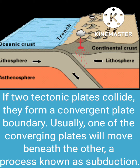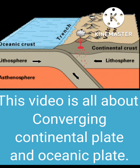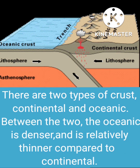If two tectonic plates collide, they form a convergent plate boundary. Usually, one of the converging plates will move beneath the other, a process known as subduction. This video is all about converging continental plate and oceanic plate.